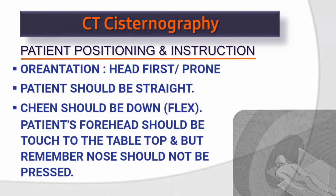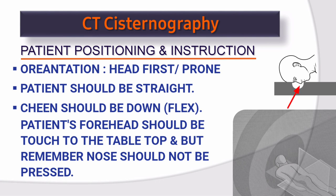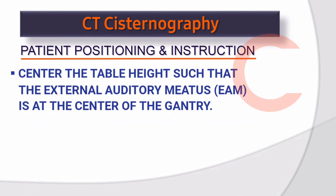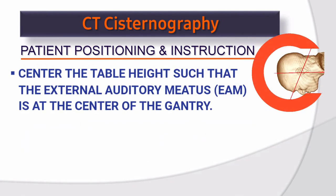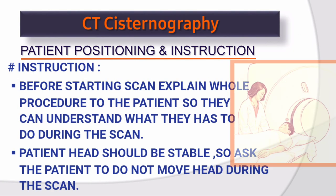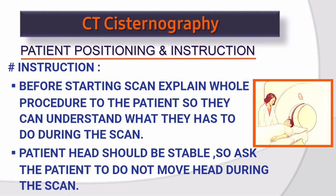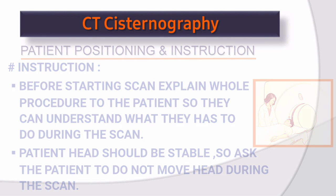Patient positioning and instruction. Orientation: head first prone. Patient should be straight. Chin should be down in flexed position. Patient's forehead should be touching the tabletop, but remember the nose should not be pressed. Center the table height such that the external auditory meatus (EAM) is at the center of the gantry. Before starting the scan, explain the whole procedure to the patient so they understand what to do. Ask the patient not to move their head during the scan.